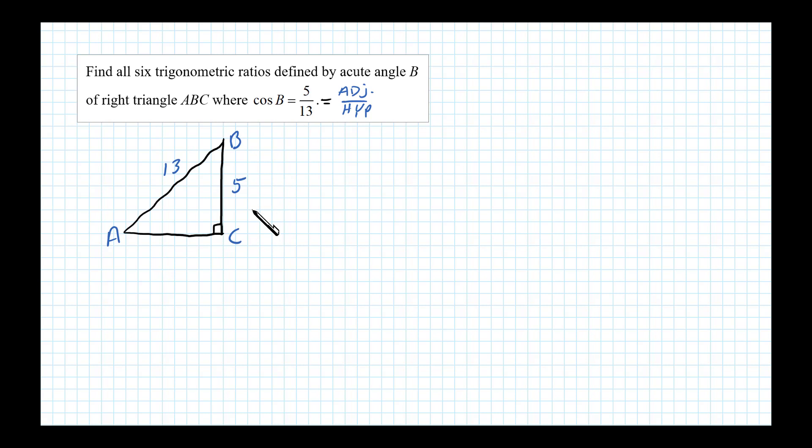Now to get our six trigonometric ratios, we're going to need the length of the side opposite angle B. We'll label it here as b. To do that, we'll use the Pythagorean theorem. So b squared plus 5 squared has to equal 13 squared - that's leg squared plus leg squared equals hypotenuse squared. Doing the math, we have b squared plus 25 equals 169.